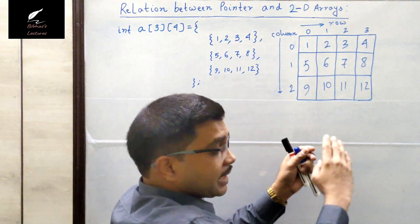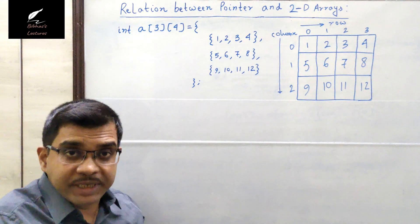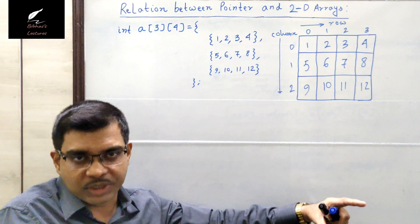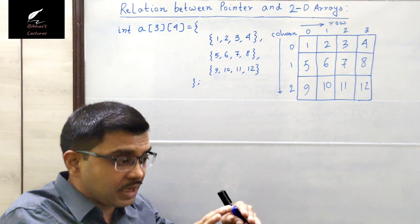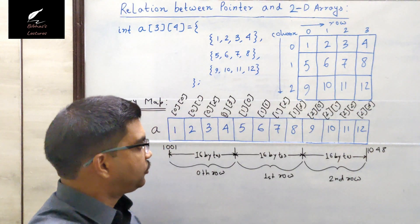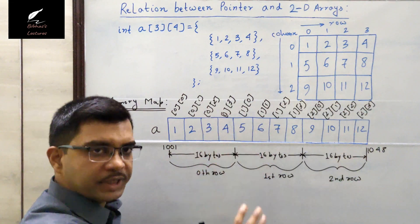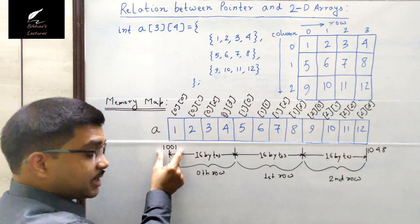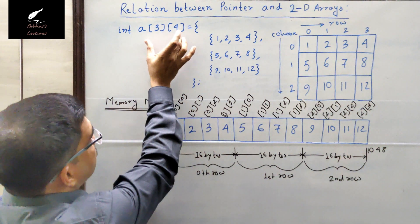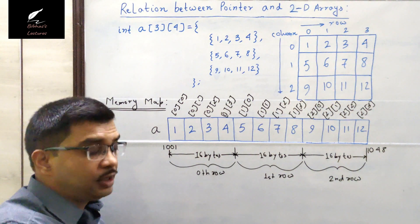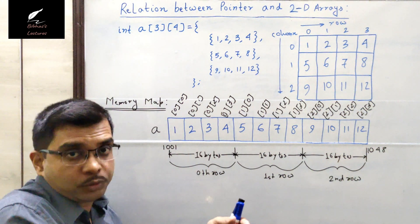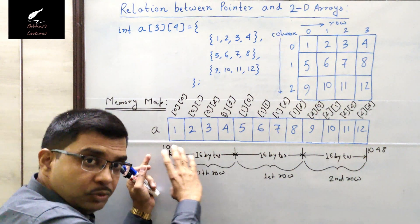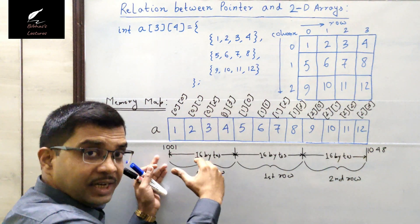Although we view this 2D array in row-column format, in computer memory (RAM) the allocation is sequential, like a 1D array. I will now draw the memory map of this 2D array. Memory allocation starts from address 1001. Each integer takes 4 bytes, so 12 integers need 48 bytes — addresses 1001 to 1048 reserved contiguously for this 2D array.